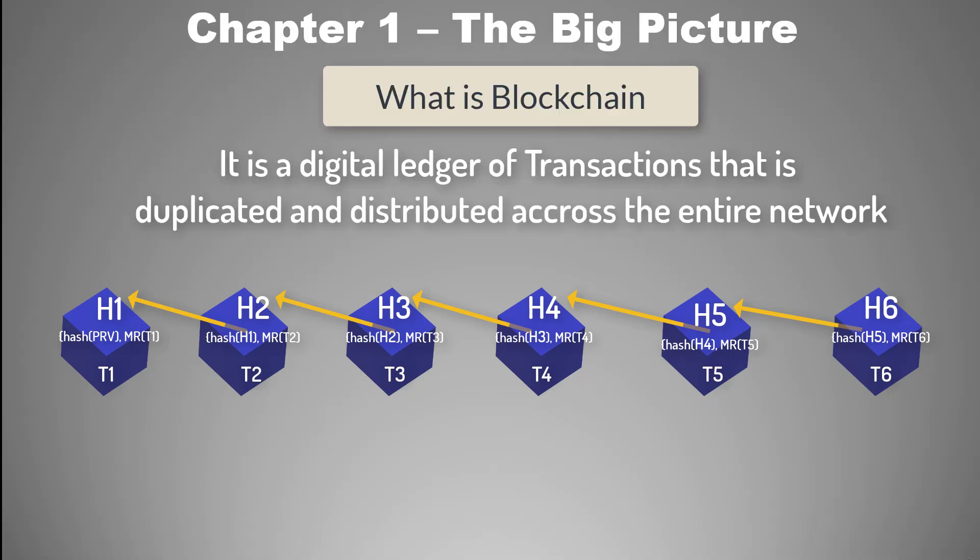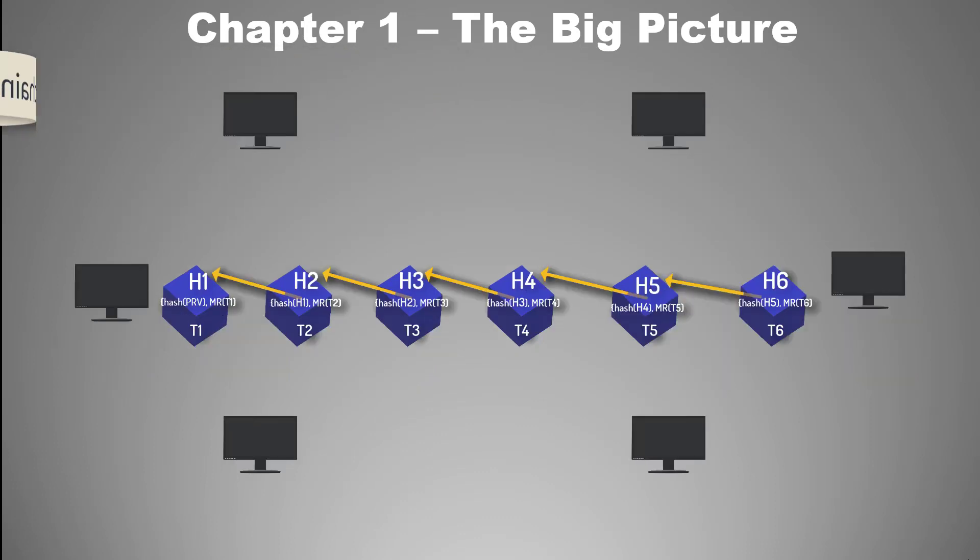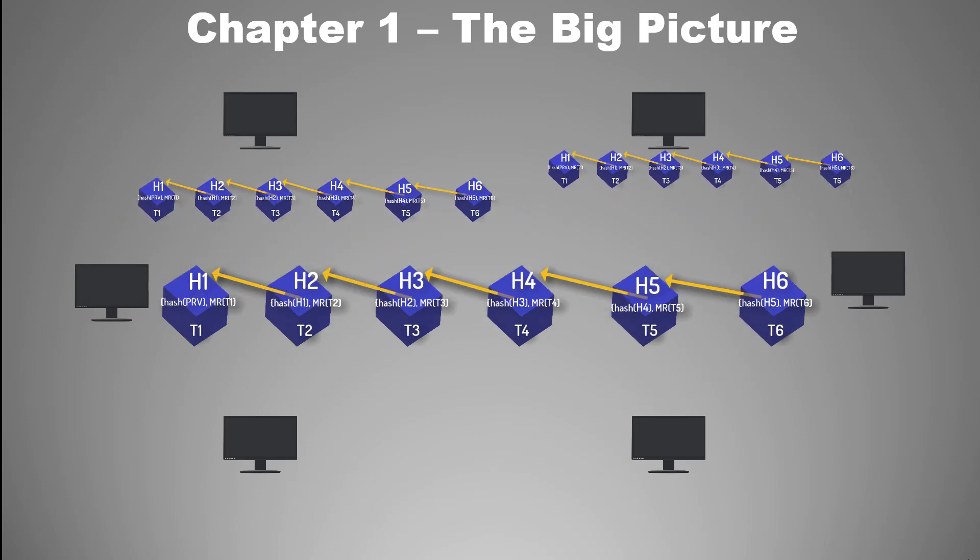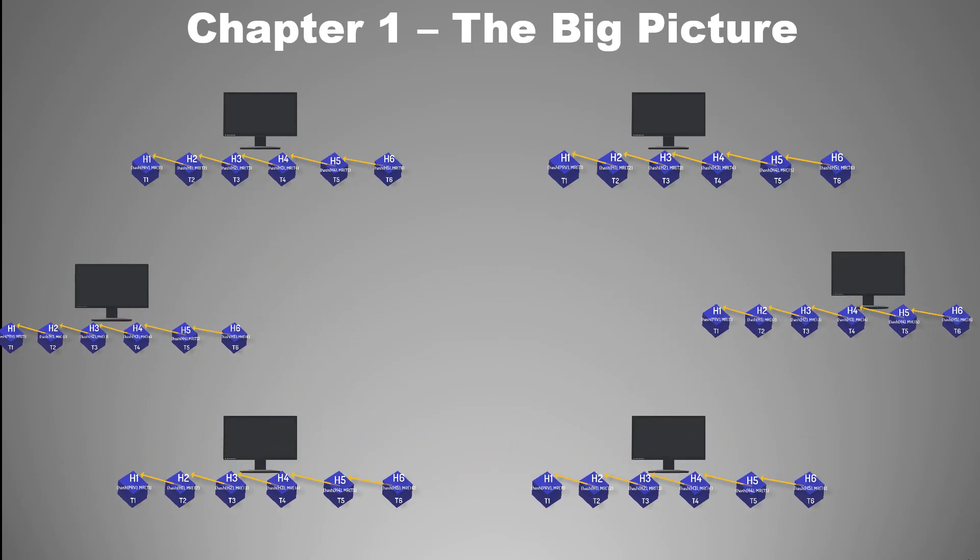But the story does not end here, because we have covered just one part of the definition. It is the ledger of transactions, but the second part is even more interesting and raises so many questions. It is duplicated and distributed across the entire network. Wow! So all the systems or nodes in the Bitcoin network can have a full copy of the blockchain.